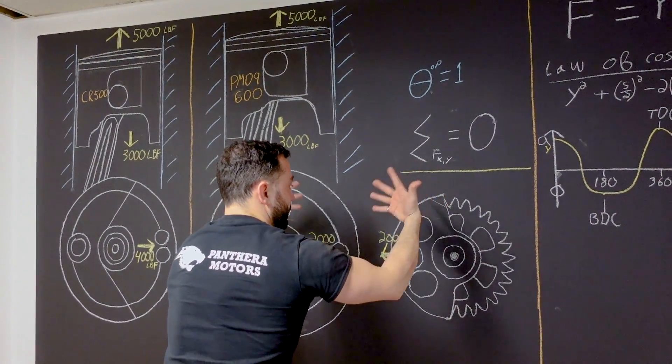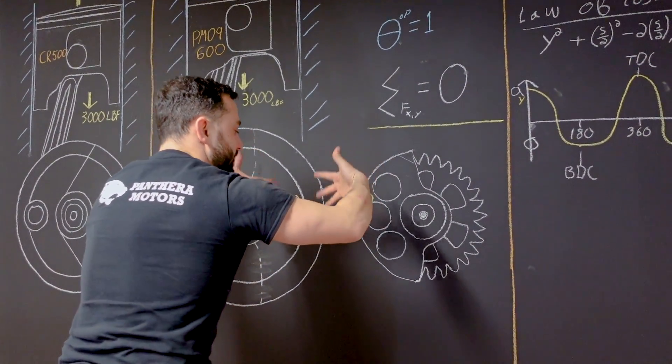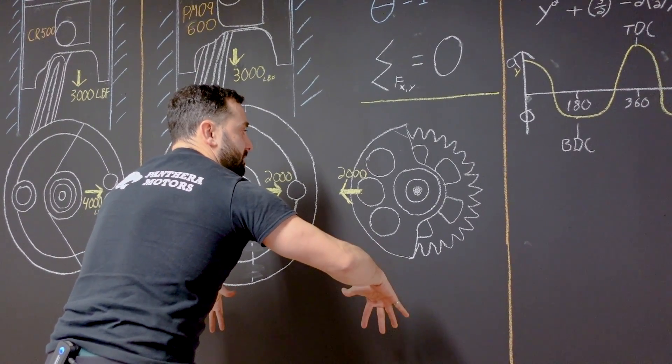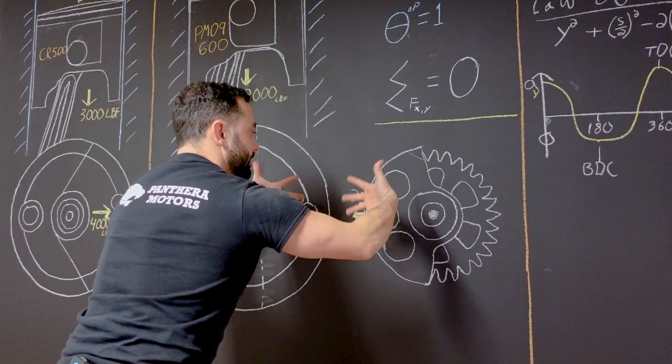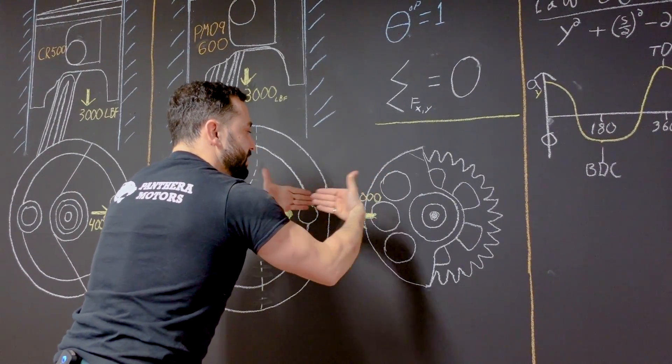Those two shafts, since they rotate opposite to each other, they're going to help themselves up and down because they're going to be at the same position. But horizontally they're going to be canceling each other out.